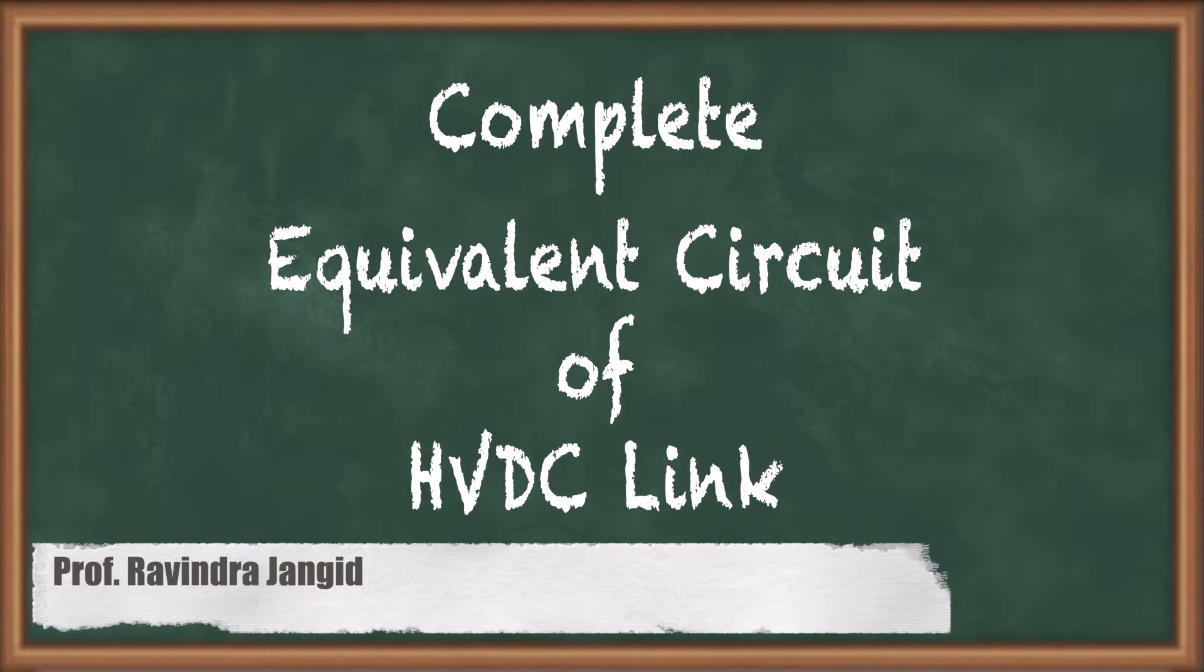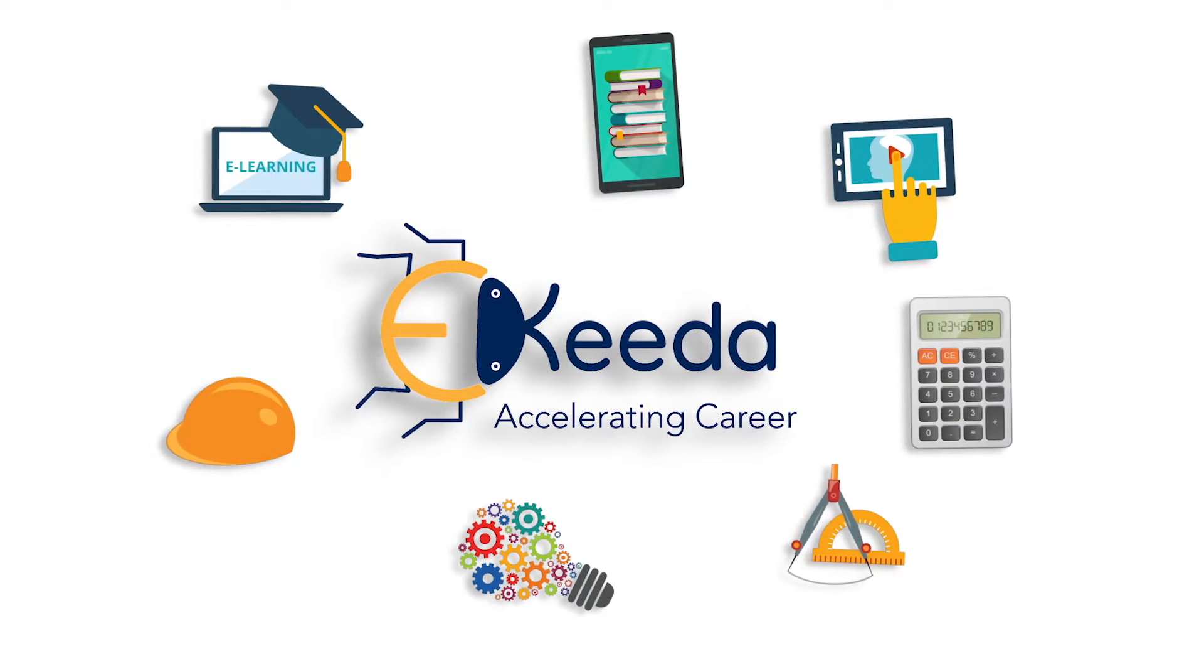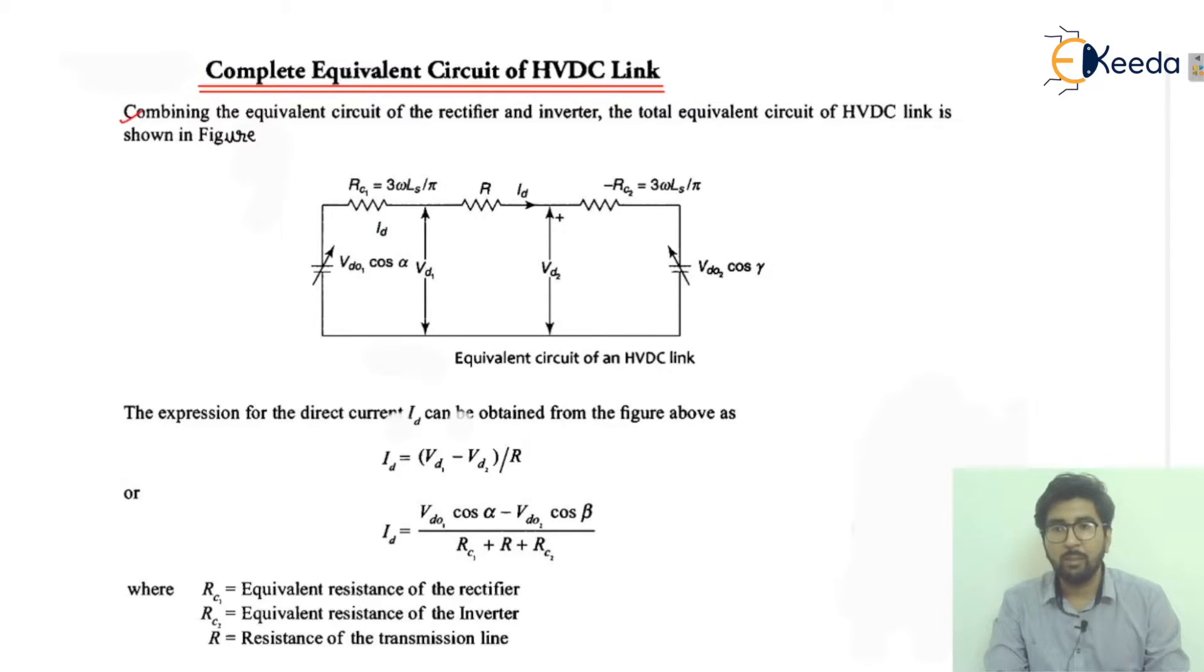We will talk about the different points. Let's start by combining the equivalent circuit of the rectifier and the inverter. The total equivalent circuit of the HVDC link is shown in this figure. This is the basic figure which I have included for the equivalent circuit of HVDC link.